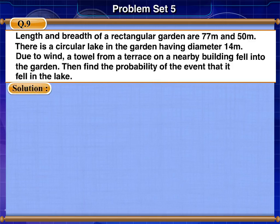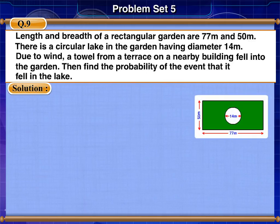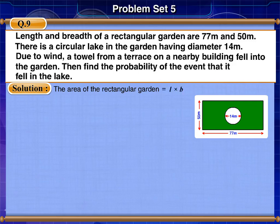Solution. The circular lake is situated inside the rectangular garden. Therefore, the area of the rectangular garden will be the number of points in the sample space. The area of the rectangular garden can be calculated using the formula length into breadth. The area of the rectangular garden is equal to 3850 square meters. Therefore, N(S) is equal to 3850.